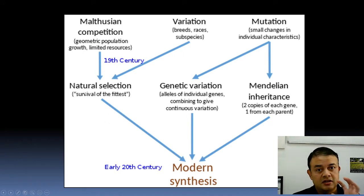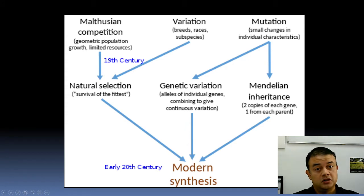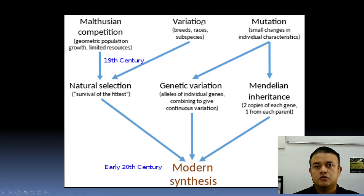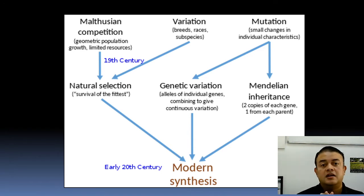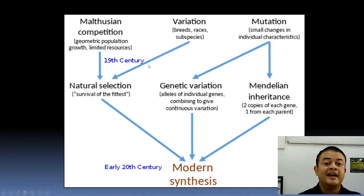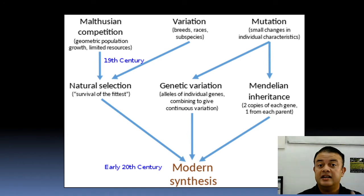In modern synthesis, natural selection is the main idea, linking with other components. The idea of survival of the fittest comes from Malthusian competition — Darwin took it from the demographer Malthus. Variation was already known, and even adaptation was recognized by earlier French evolutionists. Natural selection was synthesized around the 1880s — Darwin and Wallace are both credited. Mutation — small changes in individual characteristics — was a new concept in the 19th century, but the connection to evolution was missing, hence the need for a synthesis.